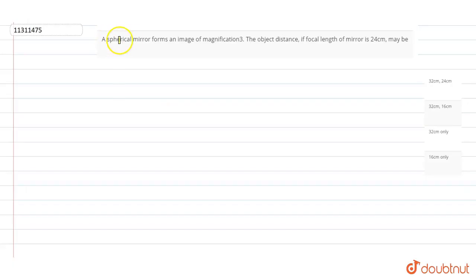Question has asked that a spherical mirror forms an image of magnification 3. The object distance if focal length of the mirror is 24 cm.